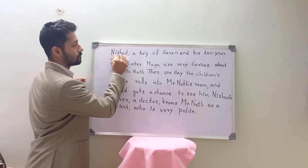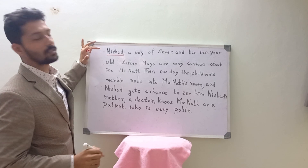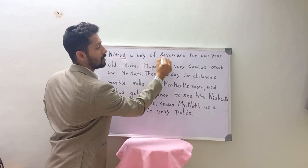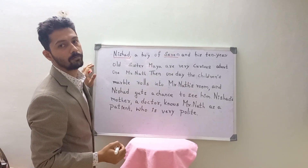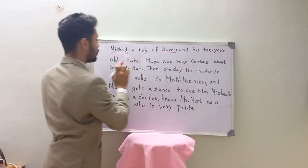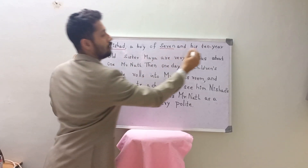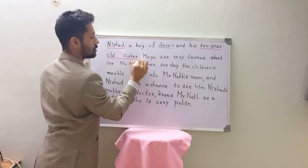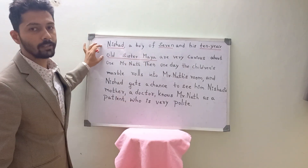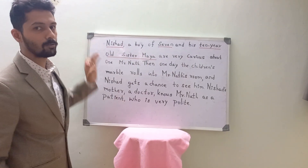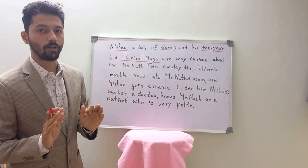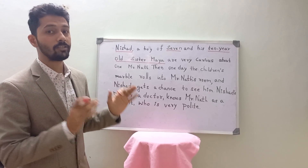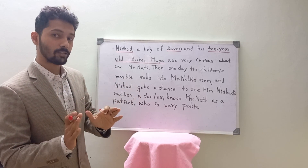So first, Nishad. Nishad is a boy of 7 — it indicates 7 years old. Again, he has a 10-year-old sister Maya. So let us underline '10-year-old sister Maya.' From the first two lines we have information: Nishad is a boy, he has a sister Maya who is 10 years old, and Nishad is 7 years old.